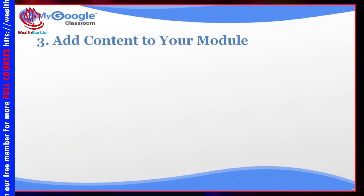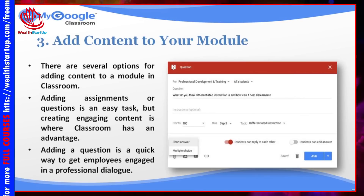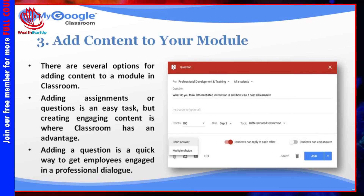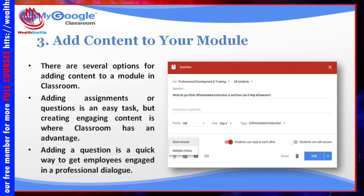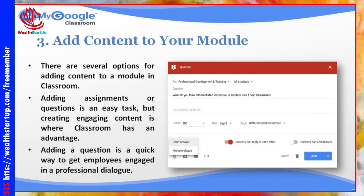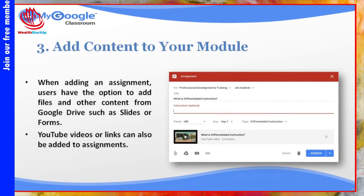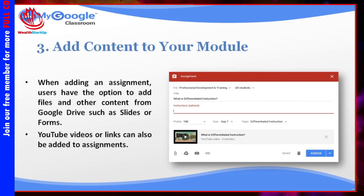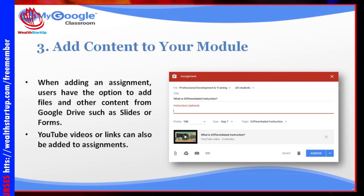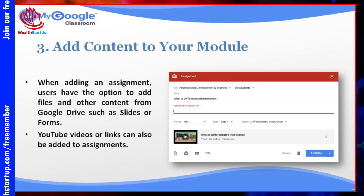Number 3: Add content to your module. There are several options for adding content to a module in Classroom. Adding assignments or questions is an easy task, but creating engaging content is where Classroom has an advantage. Adding a question is a quick way to get employees engaged in a professional dialogue. When adding an assignment, users have the option to add files and other content from Google Drive, such as slides or forms. YouTube videos or links can also be added to assignments.